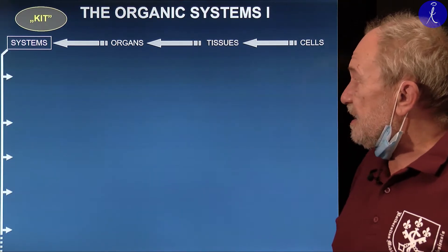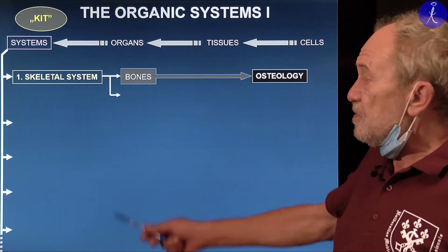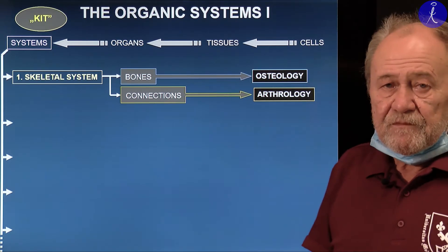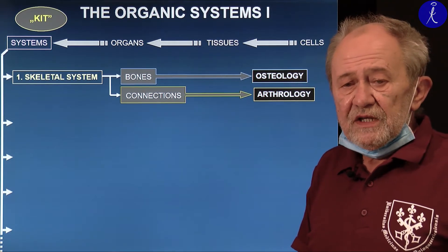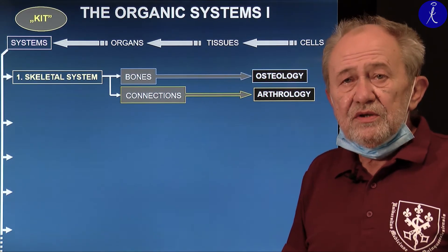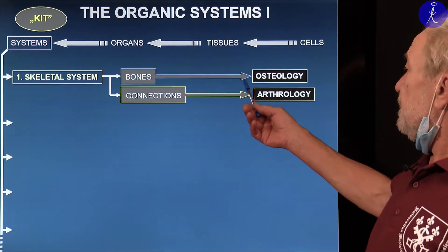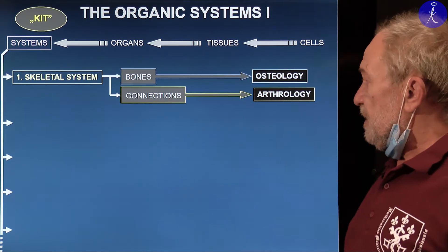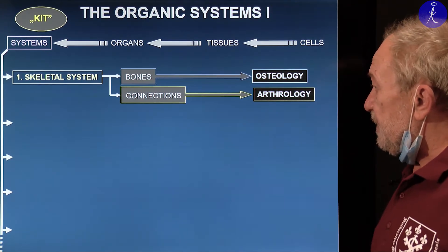First, you pick the bones and make a skeleton. The skeletal system consists of bones and connections between bones. The study dealing with bones is osteology. Studying anatomy is like learning a new language — you need a dictionary. Bone is 'os', so osteology is the science dealing with bones. 'Arthros' is the joint in Greek, and arthrology deals with joints — arthrologists are the medical experts dealing with diseases of the joints.